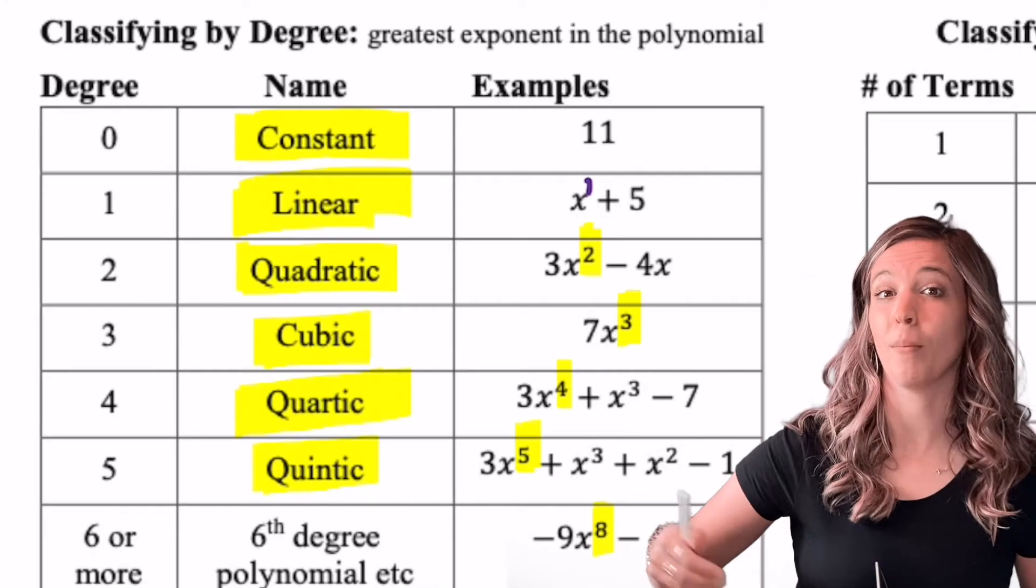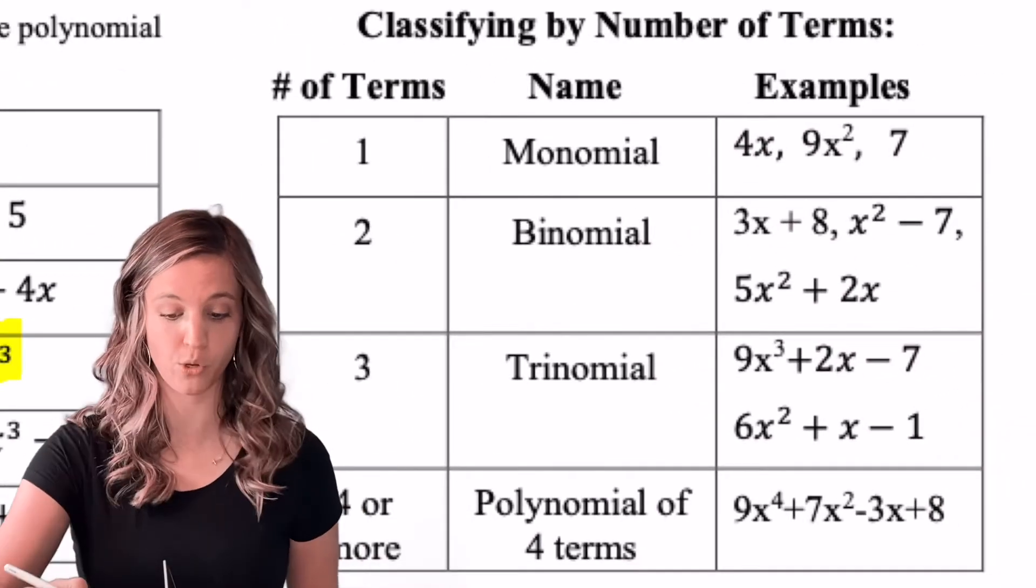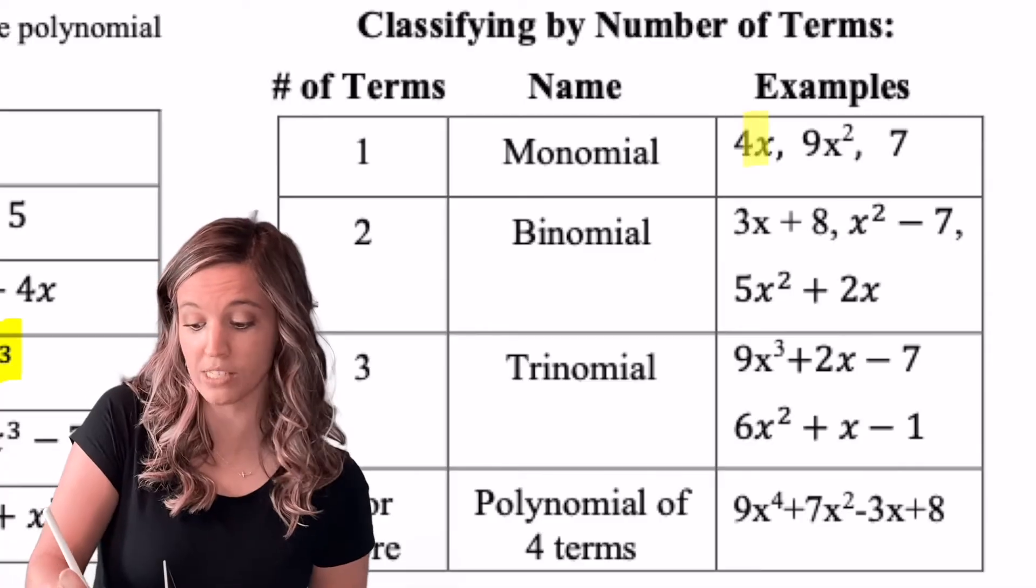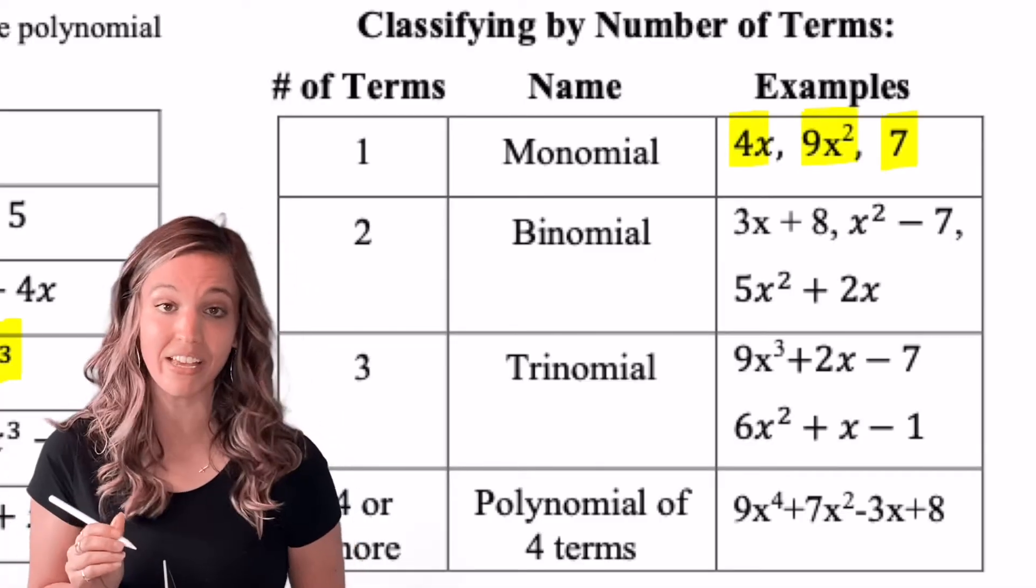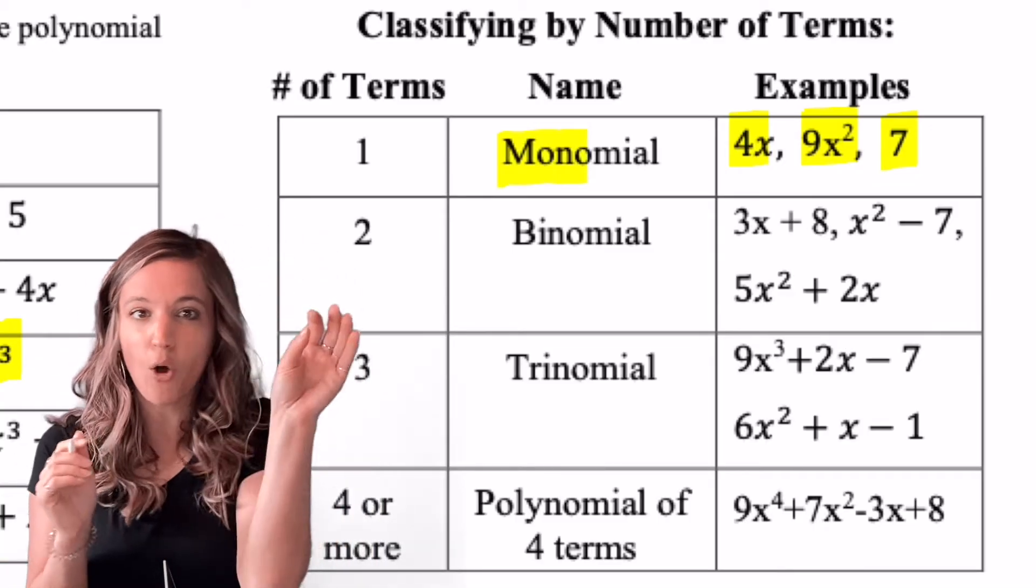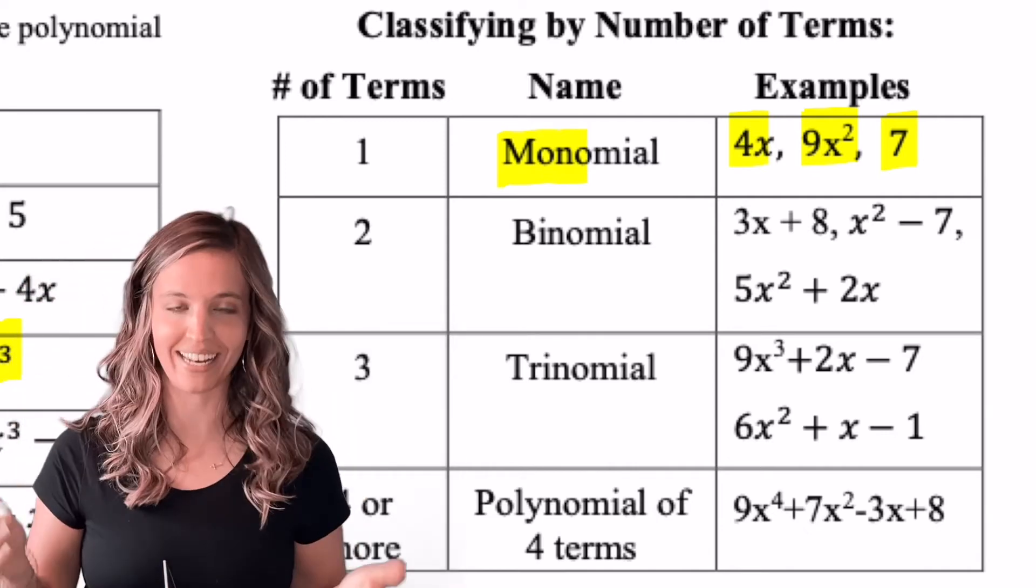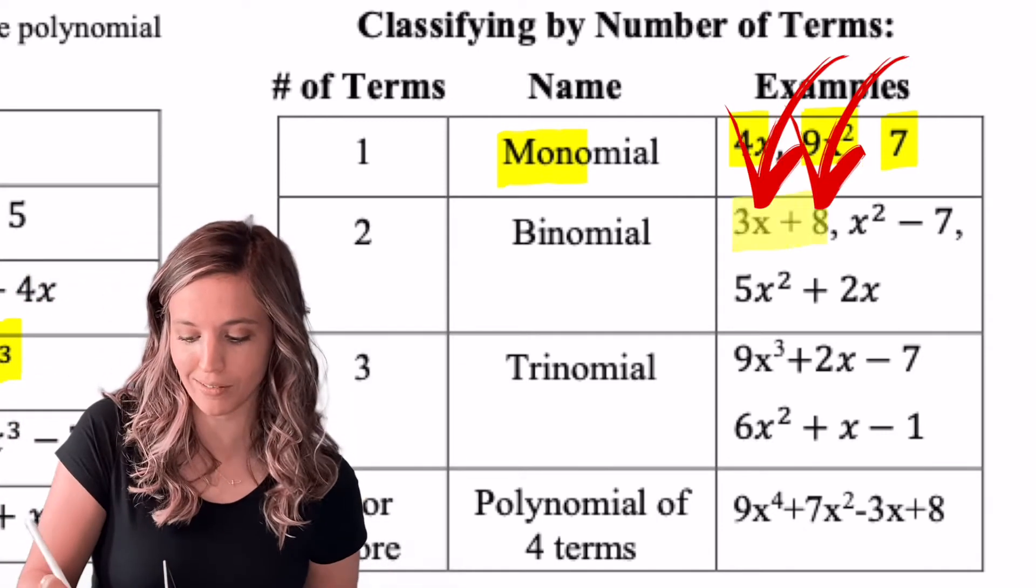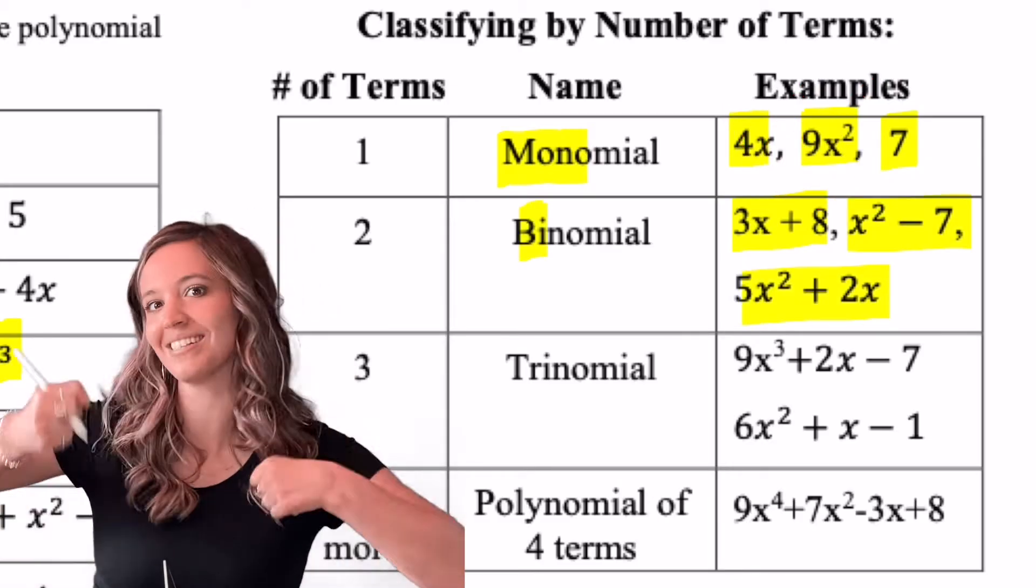To classify the polynomial by its number of terms, we look at the terms in standard form. If I have a polynomial like y equals 4x or y equals 9x squared or y equals 7, there's only one term there. That's called a monomial. Mono means one, right? Next example, we have two terms. What do you think that one's called? A binomial, right? Because we got two, like bicycle, two wheels.